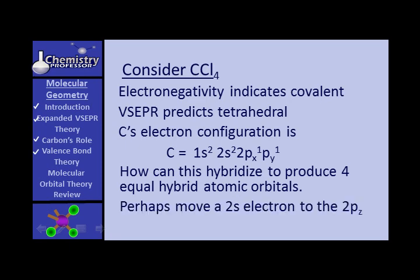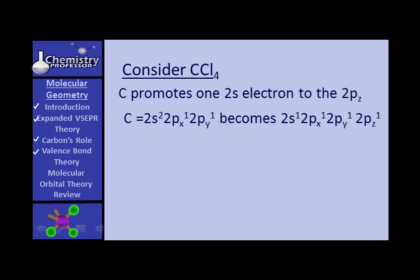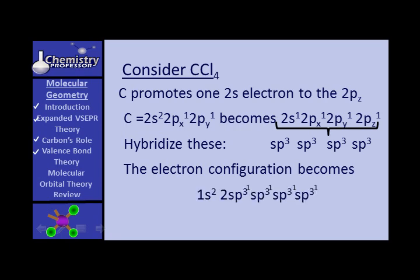Maybe we can move the 2S electron to the 2Pz. Carbon promotes one 2S electron to the 2Pz, so carbon's electron configuration becomes 1S2, 2S1, 2Px1, 2Py1, 2Pz1. Now we hybridize these four, and we produce SP3 hybrid orbitals — a hybrid of 1S and 3P. The electron configuration then looks like 1S2, 2SP3 with one electron in each of the four SP3 orbitals.